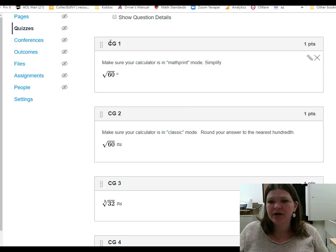We can see this first one says make sure your calculator is in math print mode and then simplify, and I ask you to do the square root of 60. Now just a real quick hint at what's to come. Look down at number two.